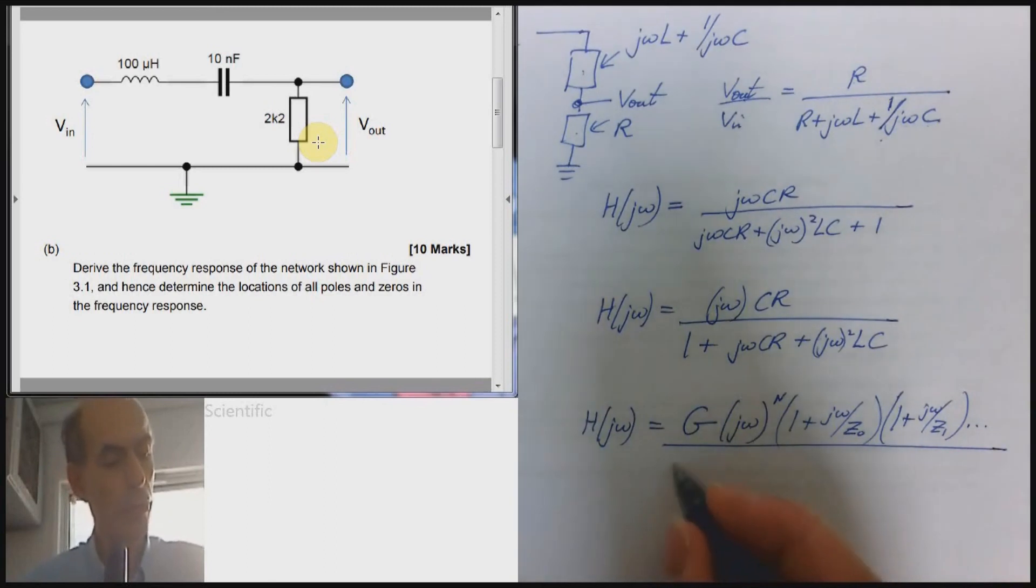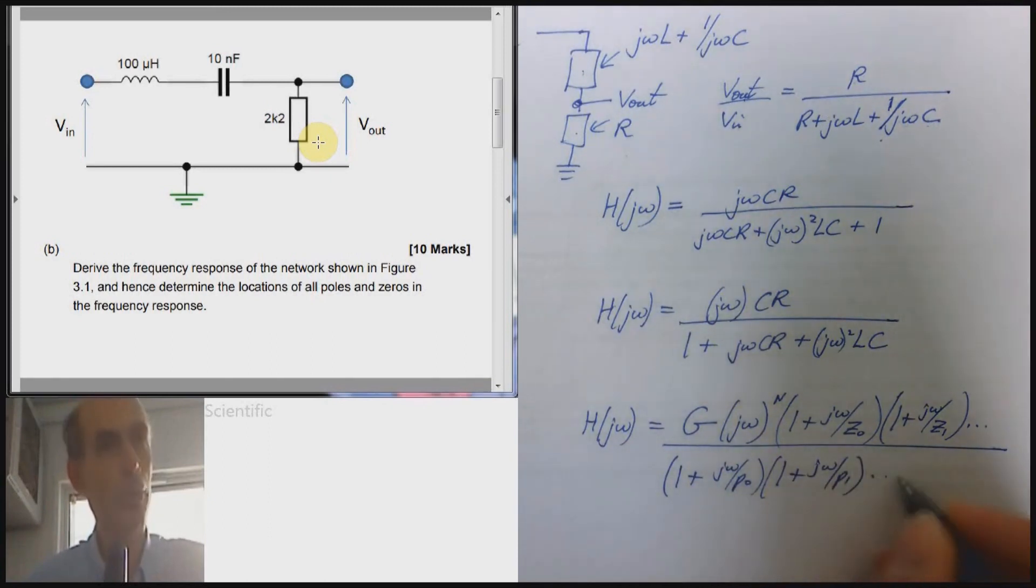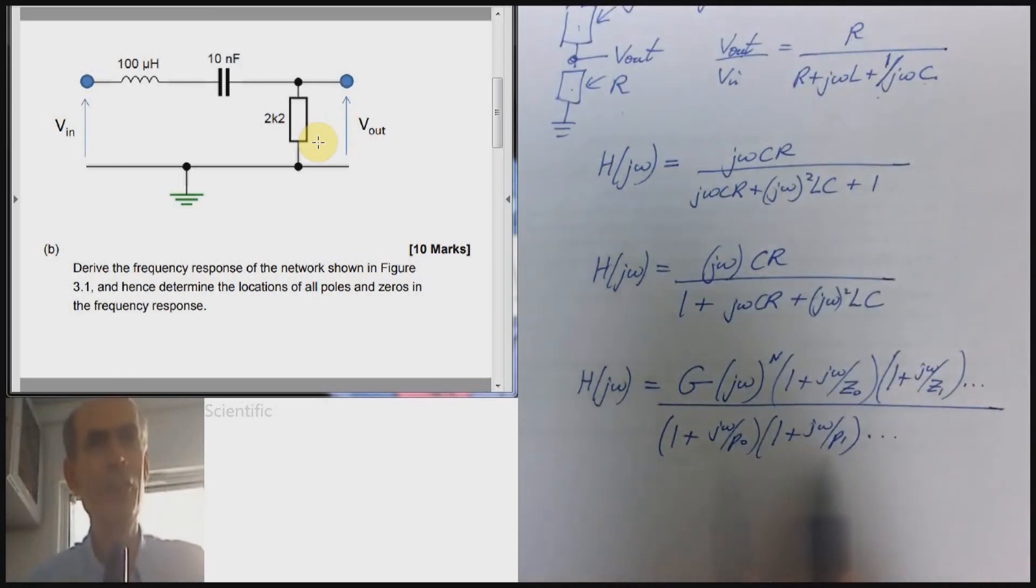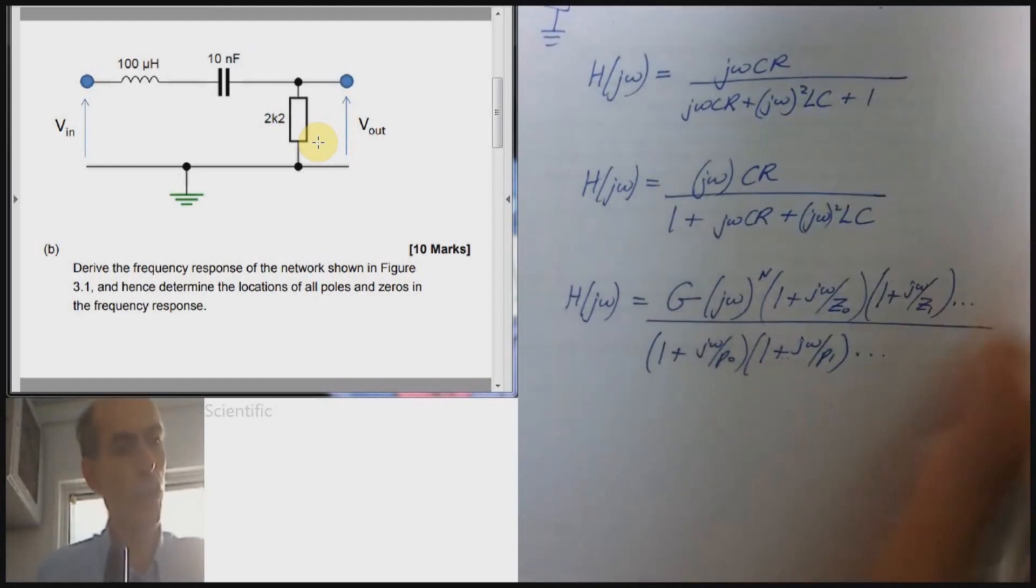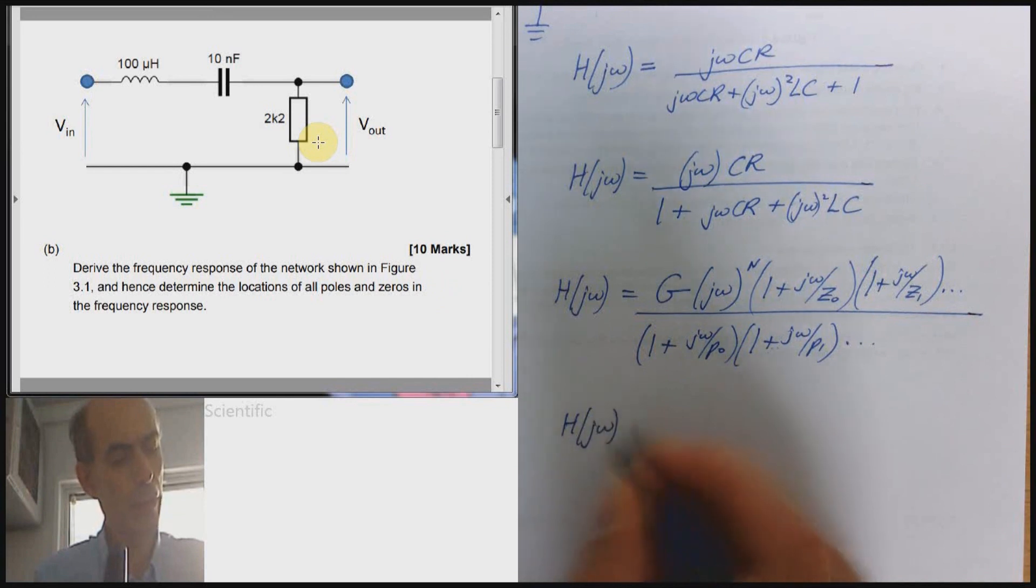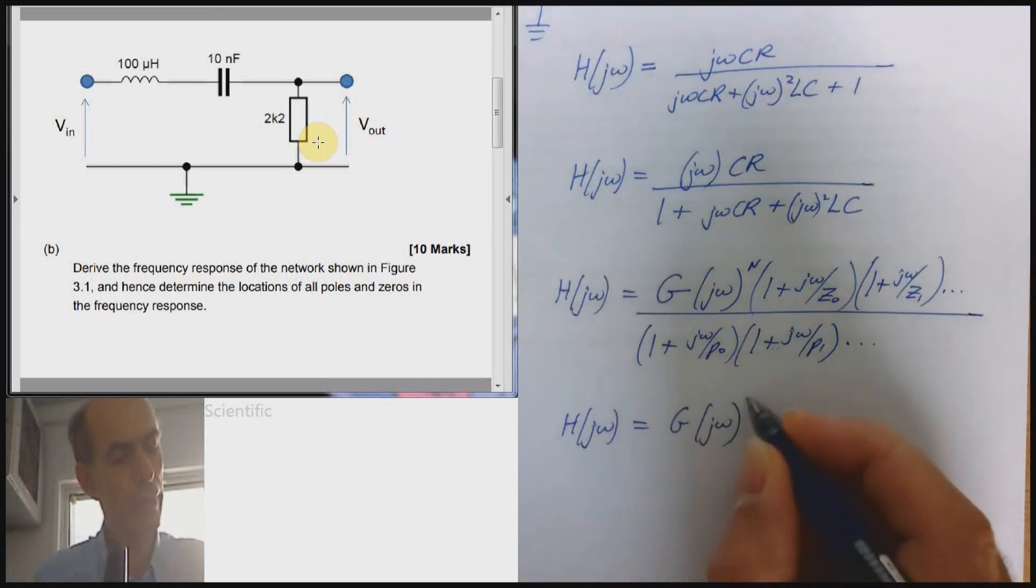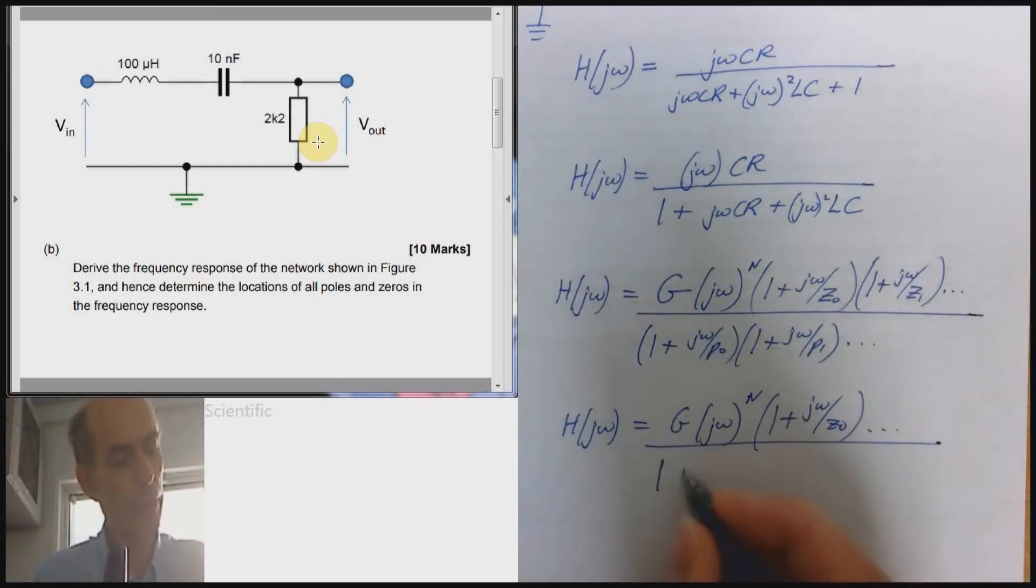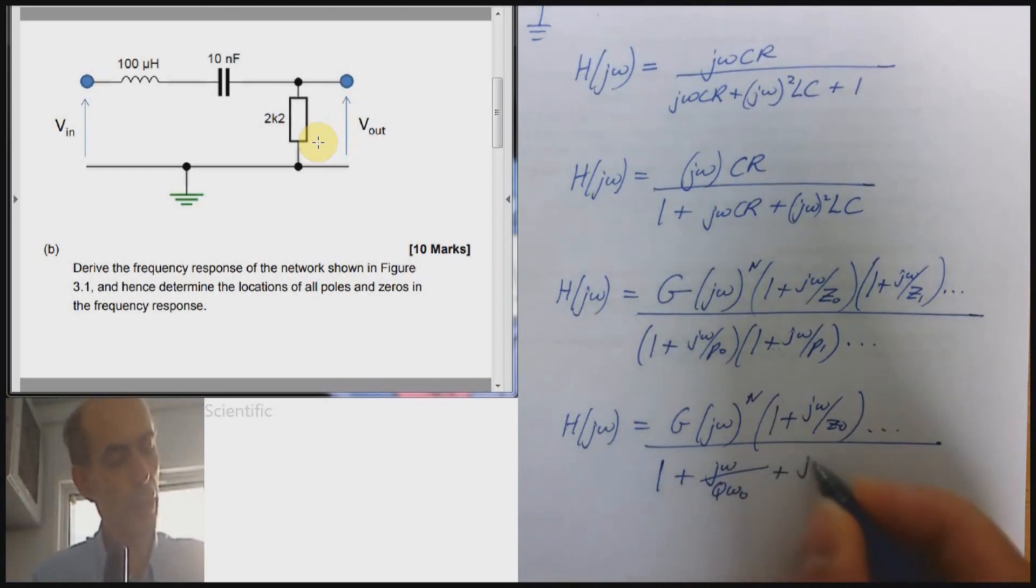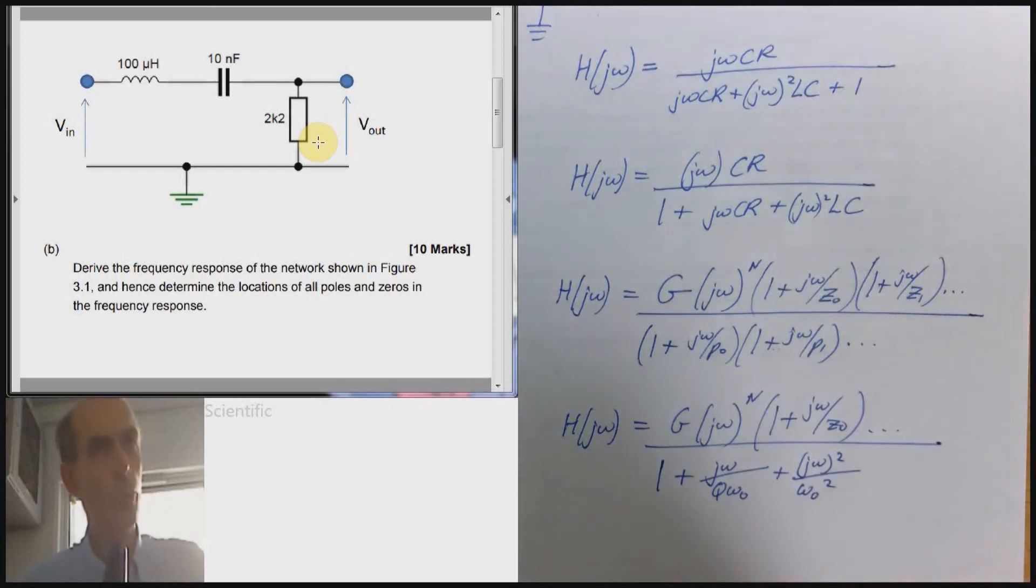Divided by all of the poles. The first pole, the second pole, and any other poles that there might be. When we have a second order system, either two zeros or two poles, we often don't use this form. We use another form which is well worth knowing. And that's the form that I put up here. Expressing the denominator in that form gives me H(jω) = G times this, n and then any zeros that we might have, over 1 plus jω over Qω_0 plus jω squared over ω_0 squared. And it's well worth knowing that equivalent form for a second order system. Right.